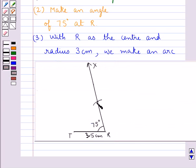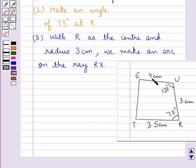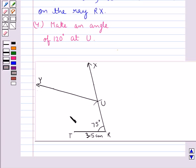Now as you can see, the angle U is given to be 120 degrees. So our next step is, make an angle of 120 degrees at U. So we have made 120 degrees at U.